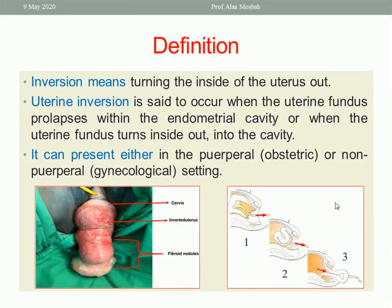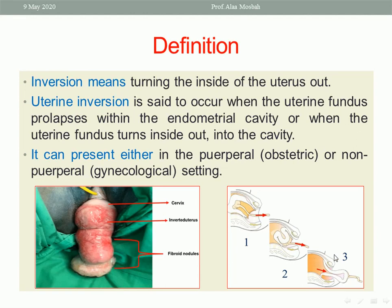Let us start with the definition. Inversion means turning the inside of the uterus out — the endometrium is on the outer surface. As you see in the picture, this is acute inversion which happened after delivery. The placenta is attached and the cord; while traction on the cord, the fundus is stretched down and the uterus is turned inside out.